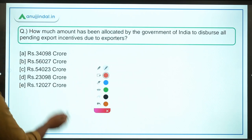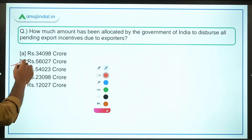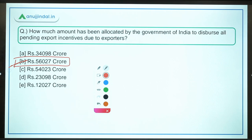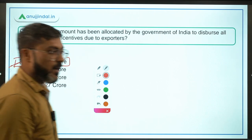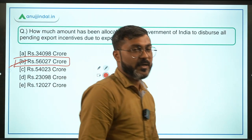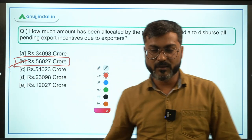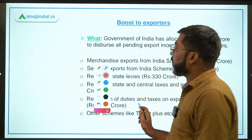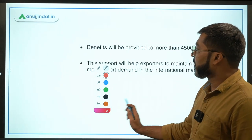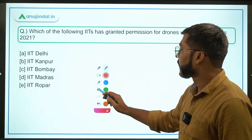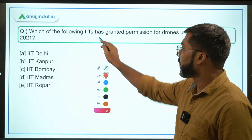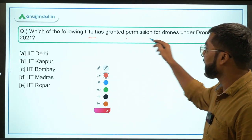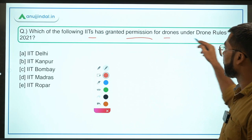The correct answer to this question is ₹56,027 crores — option B — because this is the total amount that has been allocated for this particular objective.